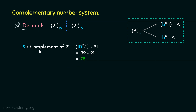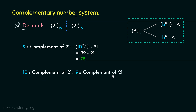Therefore, the 9's complement of 21 is 78. Now the 10's complement of 21 can be determined by using the 9's complement of 21 and adding 1 to it. We just obtained the 9's complement of 21, that is 78. Hence the 10's complement, or the radix complement, of 21 will be 78 plus 1, that is 79. This is how we can obtain the diminished radix and radix complement in decimal.